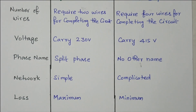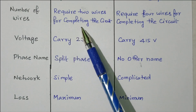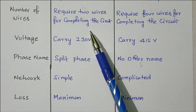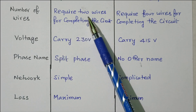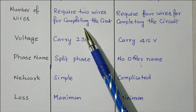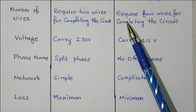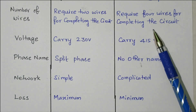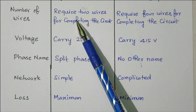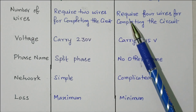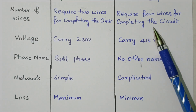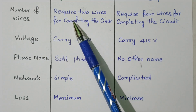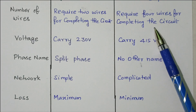The next comparison is the number of wires. Single-phase requires two wires to complete the circuit: one for phase and one for neutral. Three-phase requires four wires: three for the three phases — R, Y, B — and one neutral wire. So single-phase needs phase and neutral (two wires), while three-phase needs R, Y, B, and neutral (four wires).